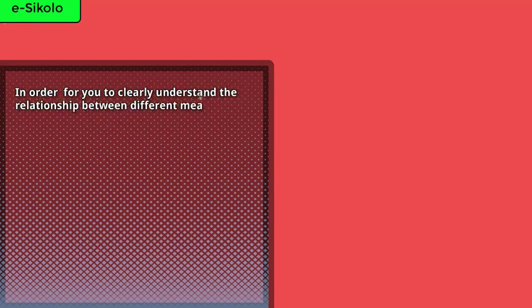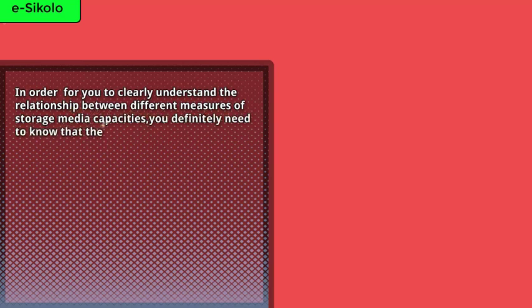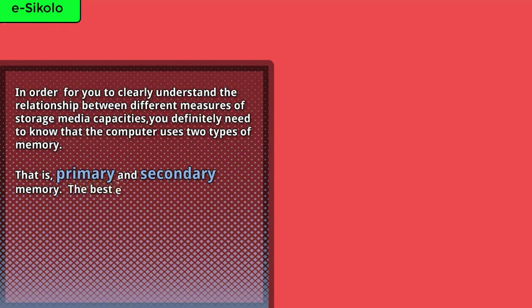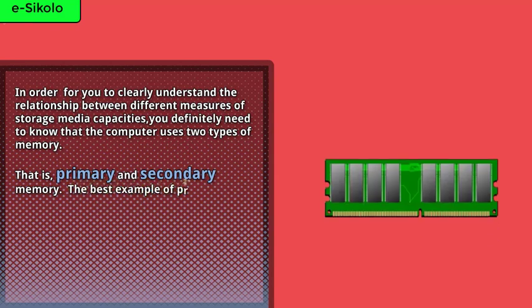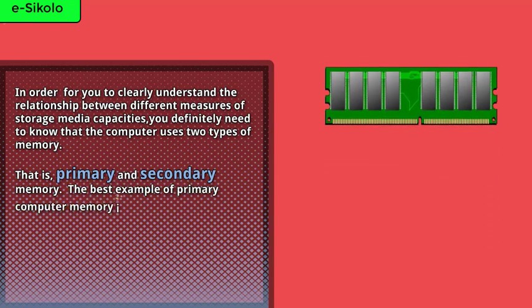In order for you to clearly understand the relationship between different measures of storage media capacities, you definitely need to know that the computer uses two types of memory: primary and secondary memory. The best example of primary computer memory is the Random Access Memory, or RAM.